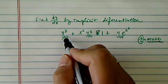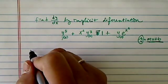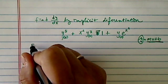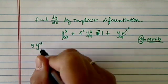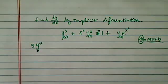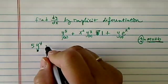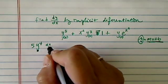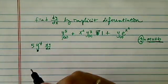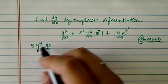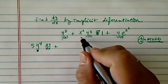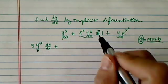Let's go ahead and find dy/dx. For the first term, when you take the derivative, it's 5y to the fourth. Now remember, I always tell my students to put a dot under it to remind yourself that y is a function of x, so you do have to use the chain rule. That's the first one, plus the derivative of the second one.